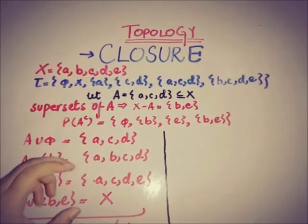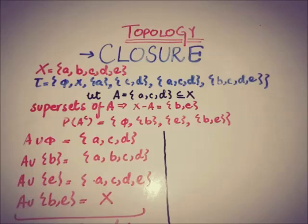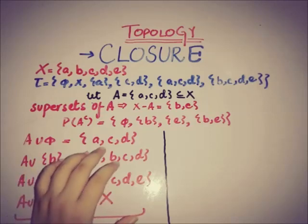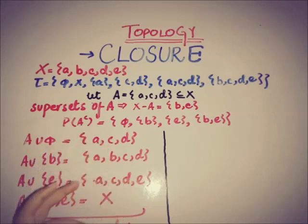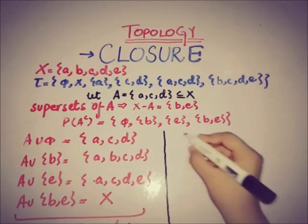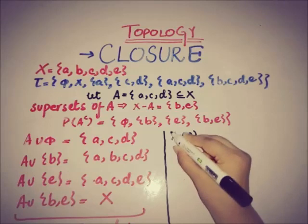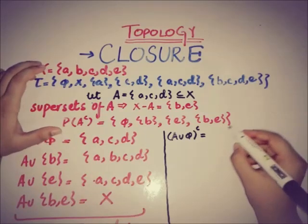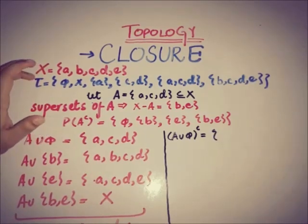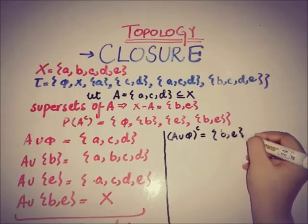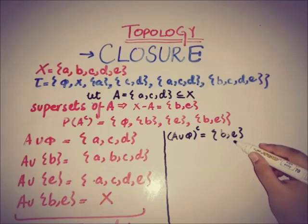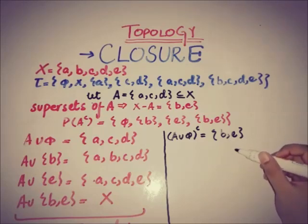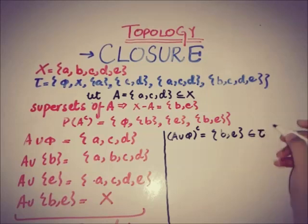Now we check which of these supersets is closed. By the definition of closure, we need the intersection of all closed supersets. To find the closed supersets, we take the complement of each: the complement of A ∪ ∅ = {a,c,d} is {b,e}, and the complement of X = {a,b,c,d,e} is ∅.